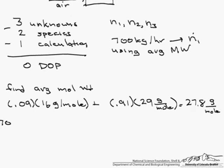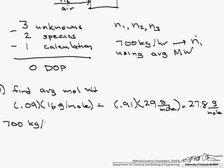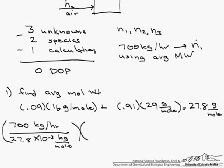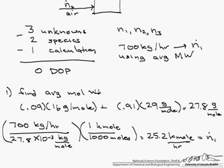So now we take our 700 kilograms per hour and divide it by 27.8 times 10 to the minus 3 kilograms per mole. And let's work with kilomoles rather than moles otherwise we're going to have these really large numbers. So 1 kilomole has 1,000 moles, and so we come out with 25.2 kilomoles per hour which is our N1.